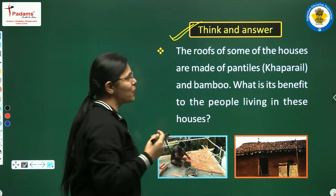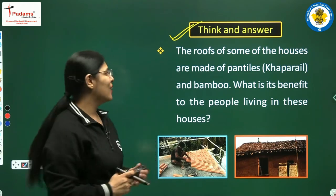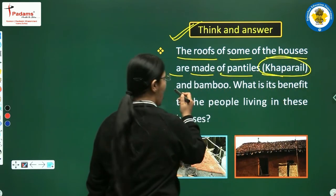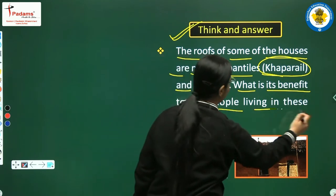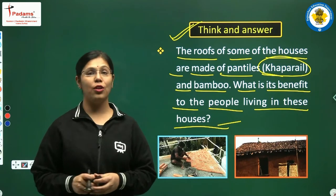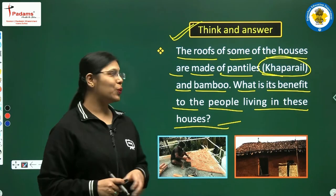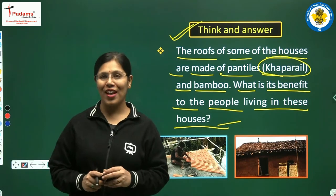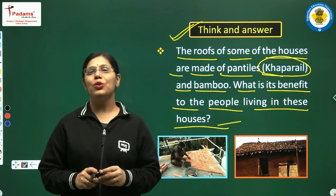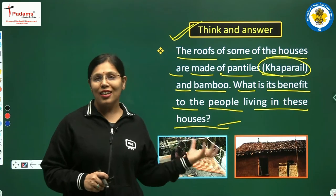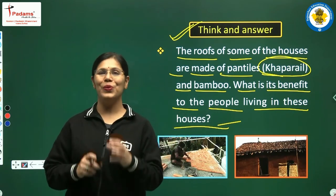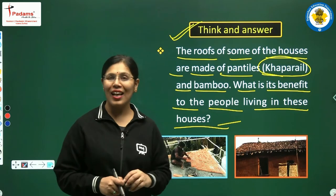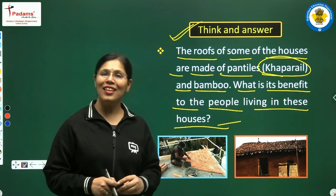Now think and answer. First: the roofs of some houses are made of pintiles — that is khaprel — and bamboo. What is the benefit to the people living in these houses? Aapko sochna hai; a hint is that it can keep the house cool. Ye jo khaprel hai, ye baas hai, ye ghar ko thanda rakhne mein sahayta de sakti hai. Apne parents aur bado se baat karni hai aur iska answer sochna hai.